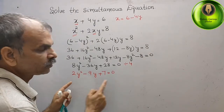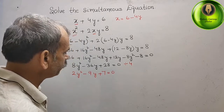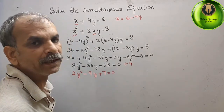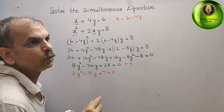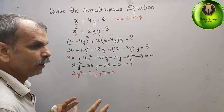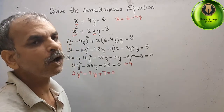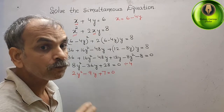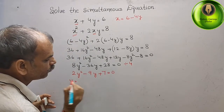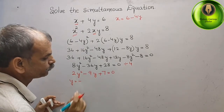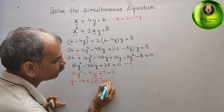Now we need to solve 2y² - 9y + 7 = 0. We'll use the quadratic formula instead of middle term splitting. The formula is: y = (-b ± √(b² - 4ac)) / 2a.